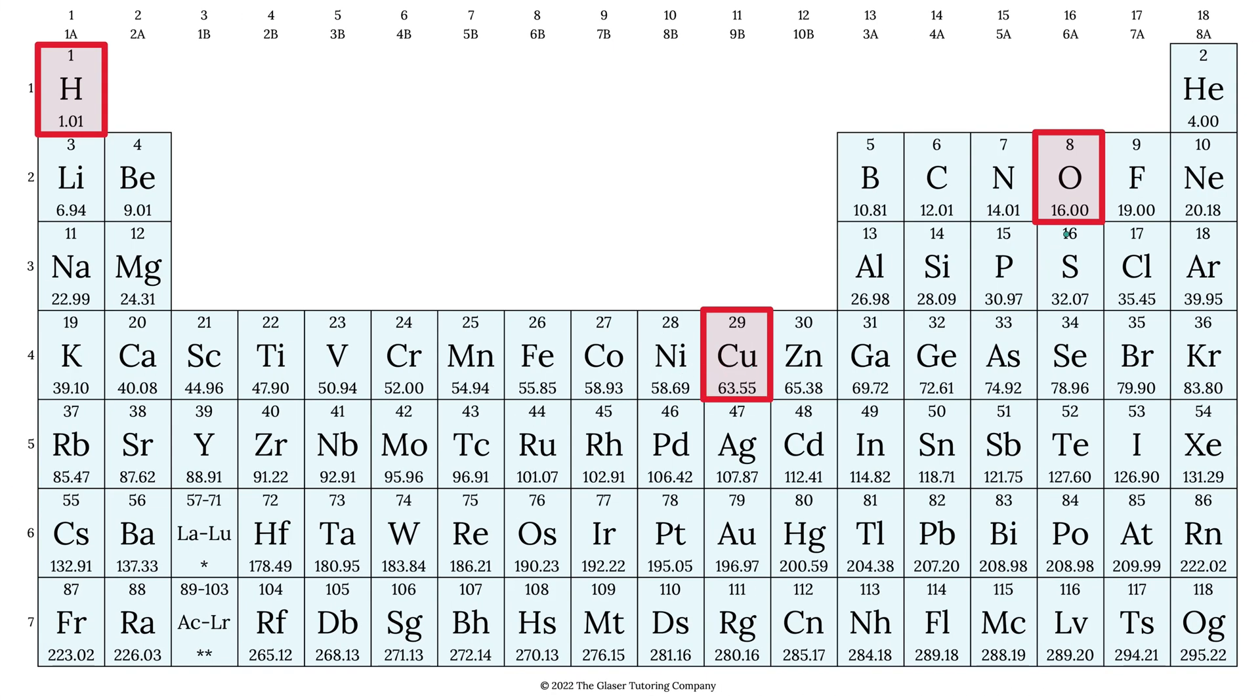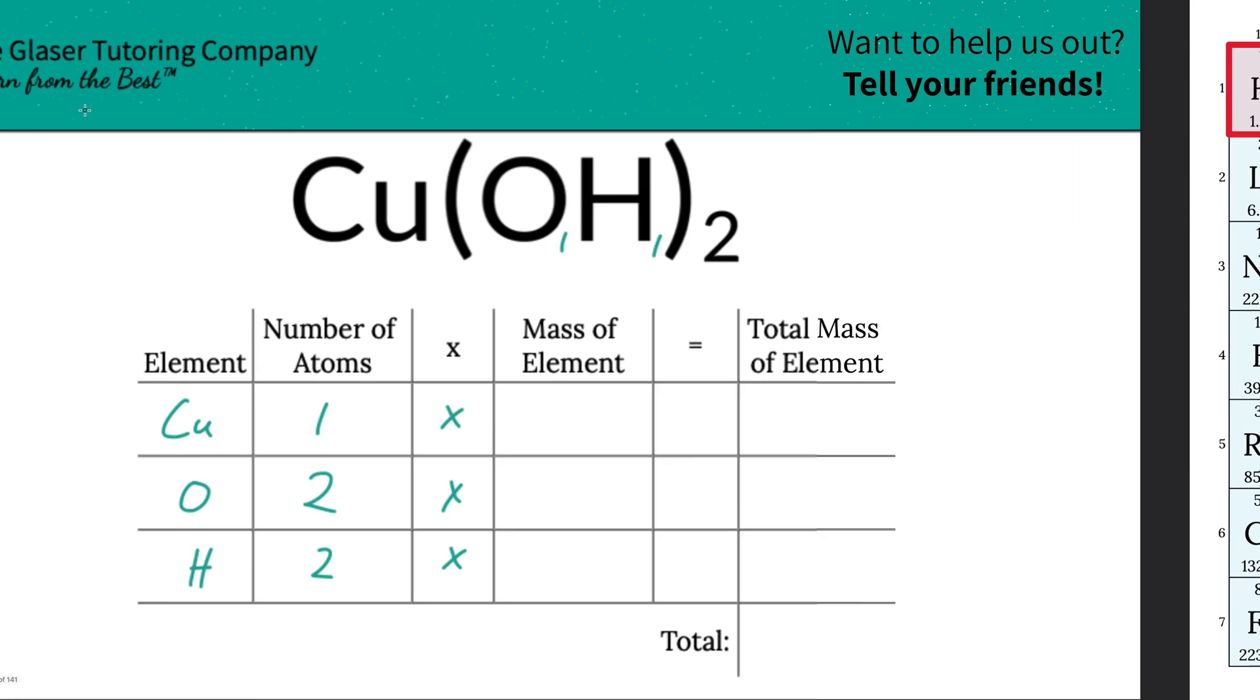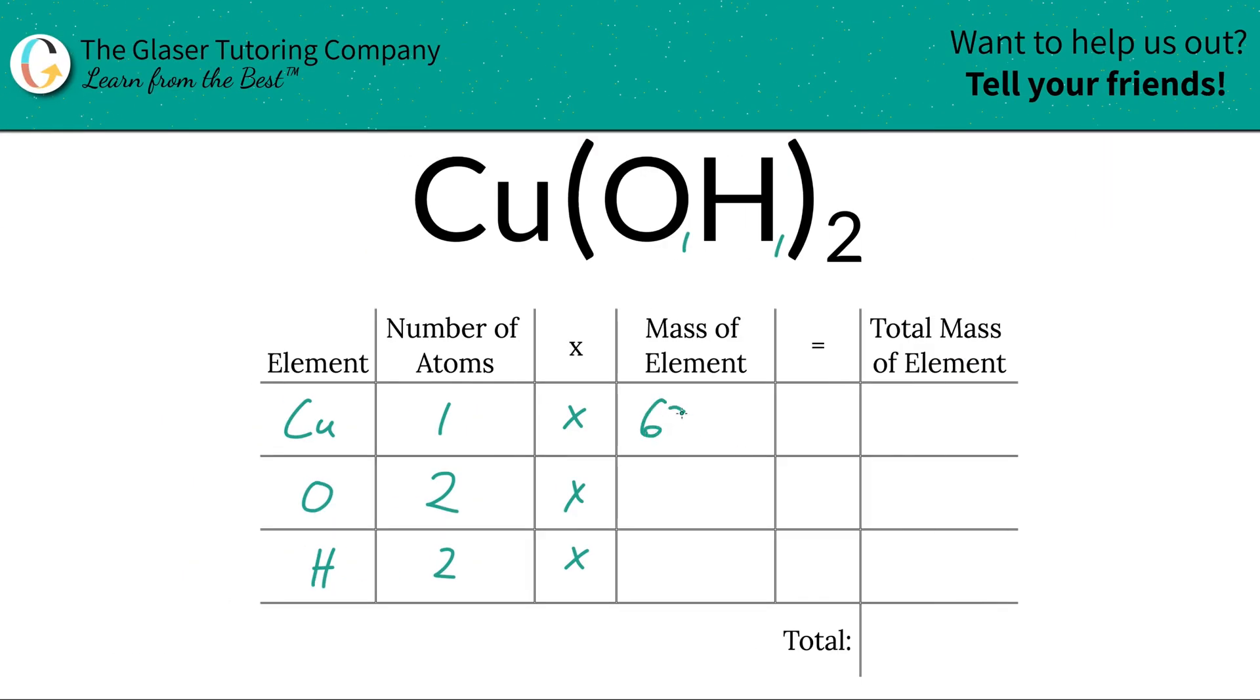Here's copper's mass, 63.55. Oxygen is 16, and hydrogen is 1.01. So those are the values we're going to plug in. So this is 63.55. Oxygen is 16, and hydrogen is 1.01.